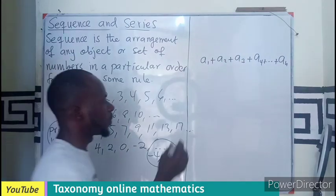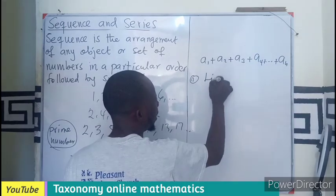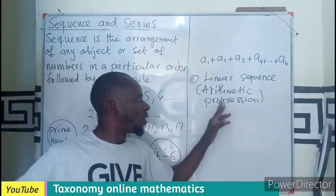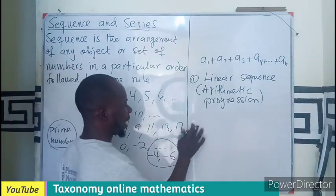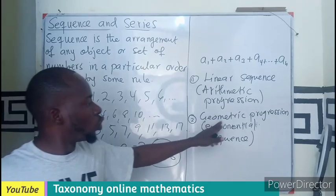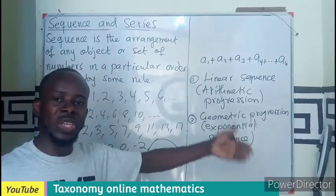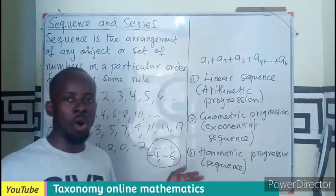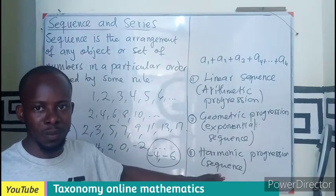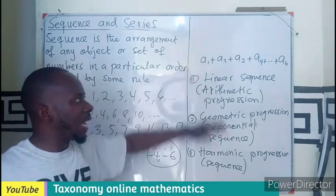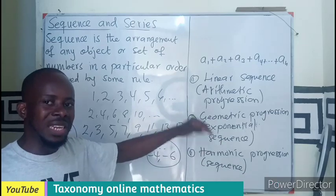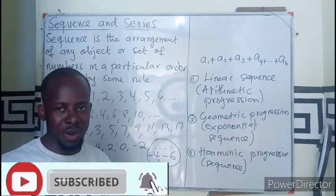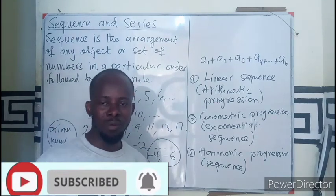Now let's talk about the types of sequences. The first one is called a linear sequence, also known as arithmetic progression. The second one is called geometric progression, or exponential sequence. We will take each of these one after the other in the next episode. Don't forget to share, like, and come back for more. Bye!